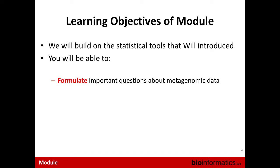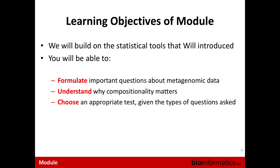You will be able to formulate important questions about metagenomic data. Understand why compositionality matters. Choose an appropriate test given the types of questions asked. There's an obscene number of different statistical tests — more than you can shake a stick at. We can't run through everything, but just the principles. In two years, once everything used now has been replaced, you'll be able to say you understand what people are trying to do.